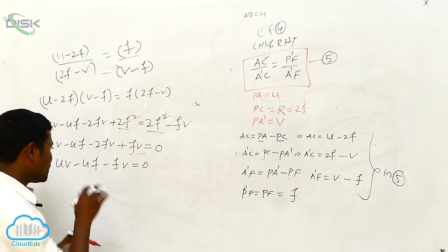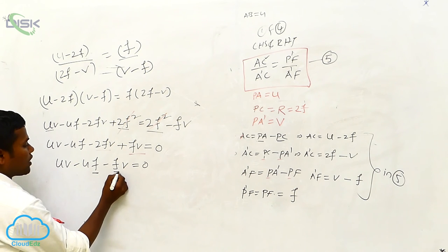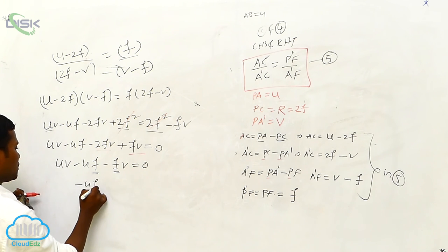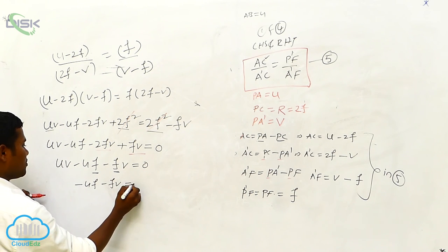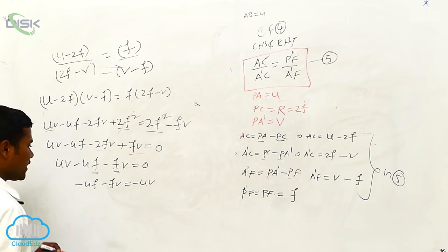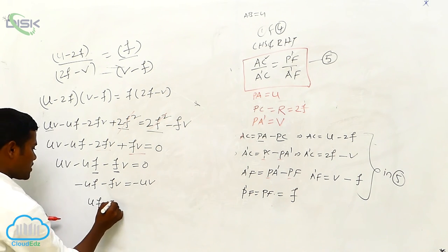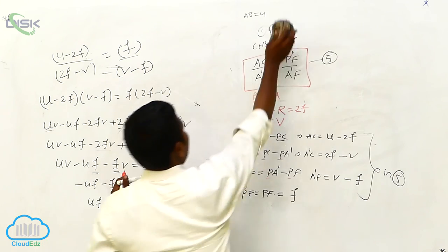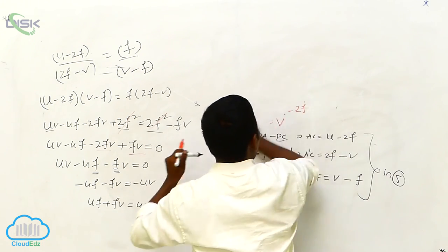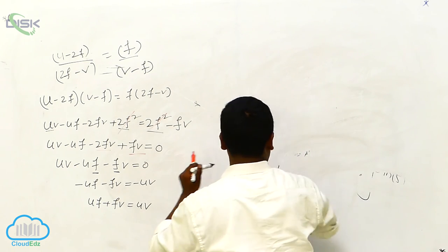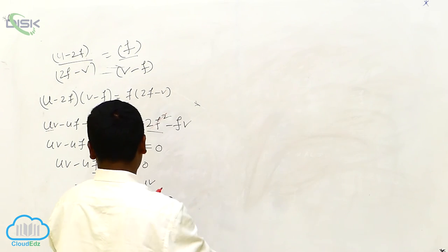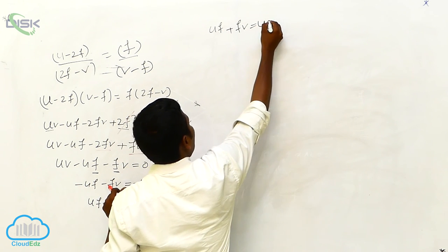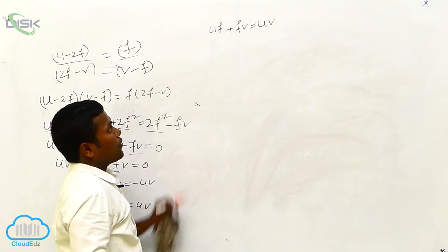Now, which terms have F? Here also F, here also F — keep one side, then the remaining take another side. So: minus UF minus FV equals minus UV. Taking common minus: UF plus FV equals UV. This is the final equation.